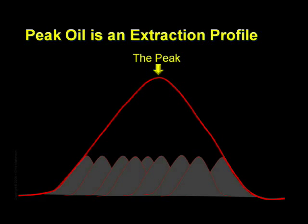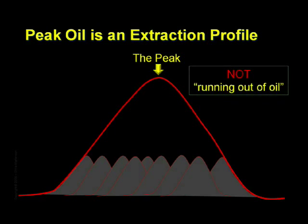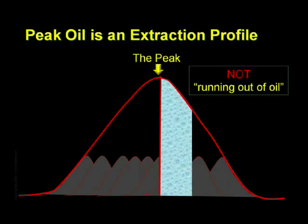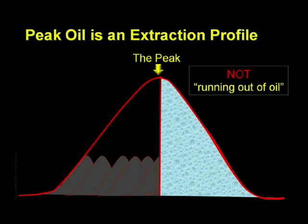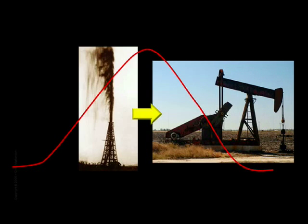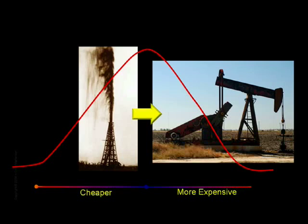Peak oil is not synonymous with running out of oil. At the moment of peak, somewhere right around half the oil still remains. But something interesting happens at the halfway mark. Where oil gushed out under pressure at first, the back half usually has to get laboriously pumped out of the ground at higher cost. Where every barrel of oil was cheaper to extract on the way up, the reverse is true on the way down. Each barrel becomes more costly in terms of time and money and energy to extract. Eventually, it costs more to extract a barrel of oil than it is worth, and that's when an oil field is abandoned.